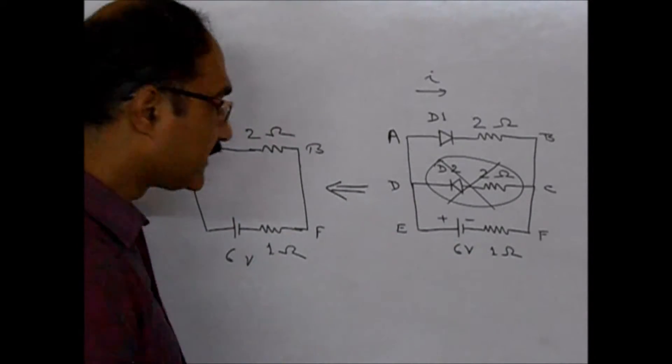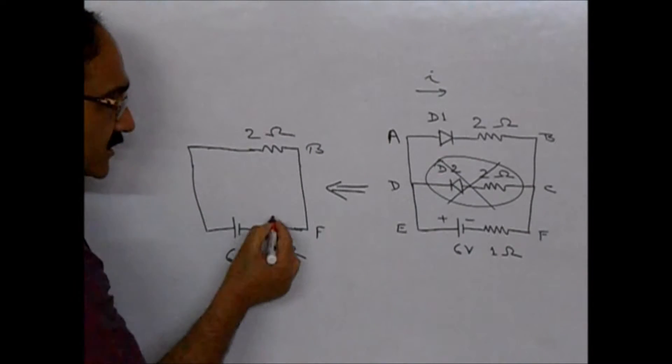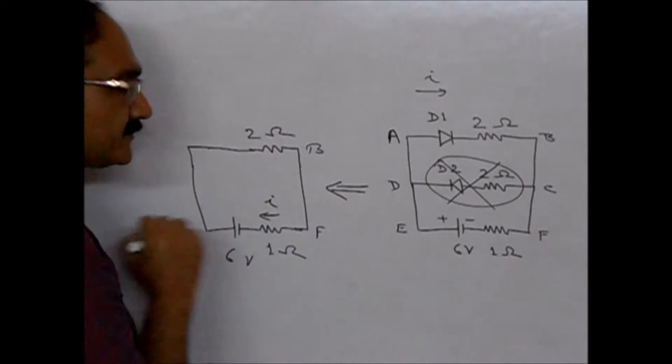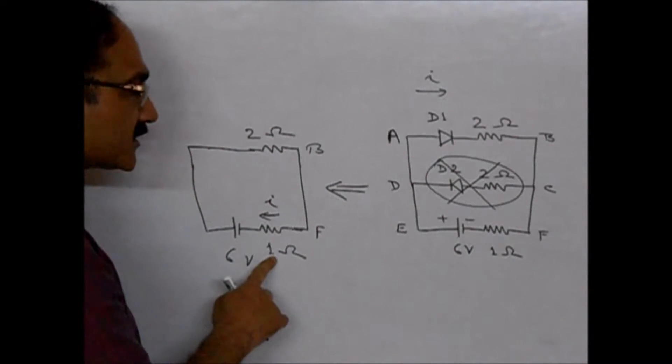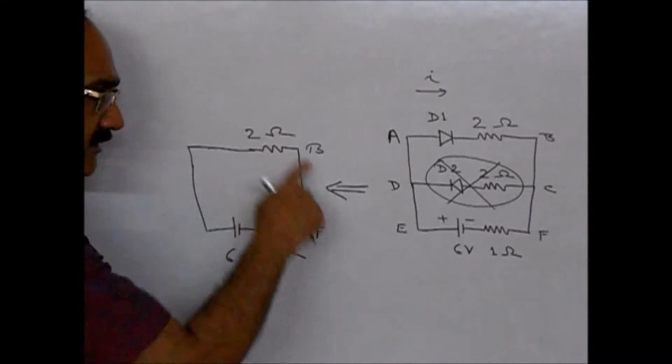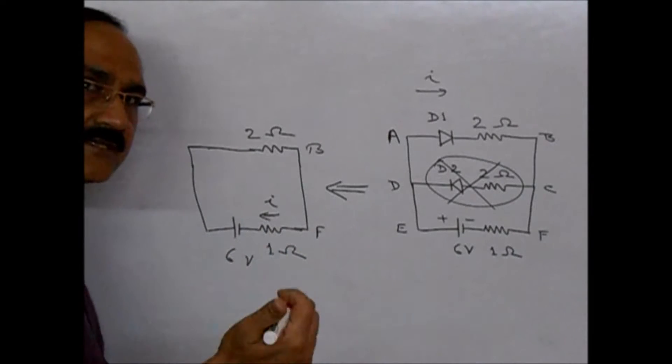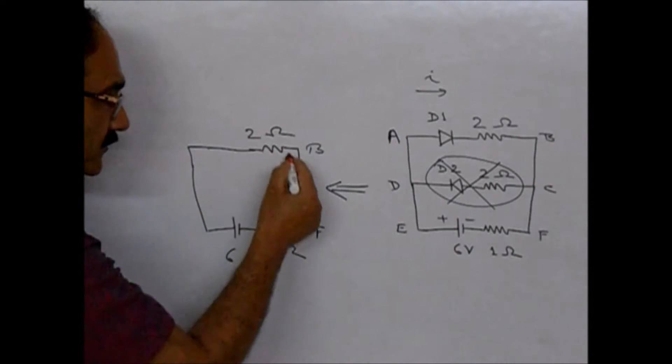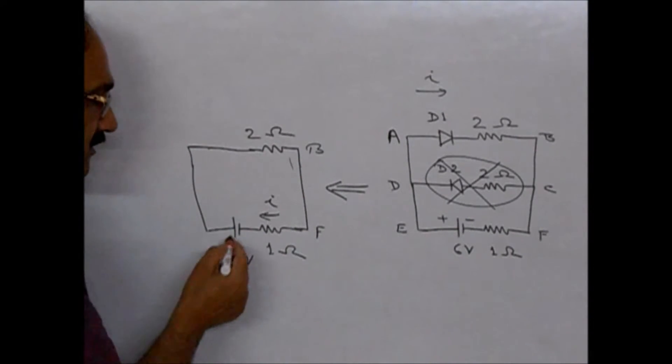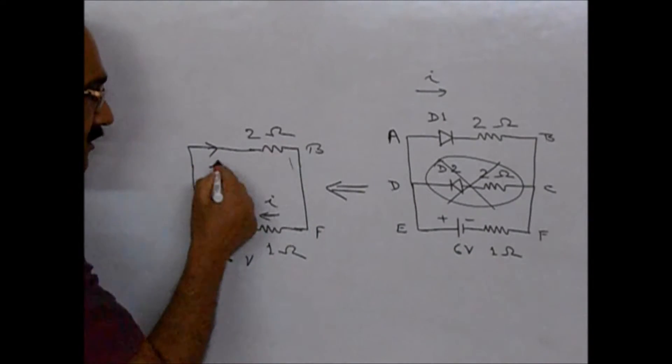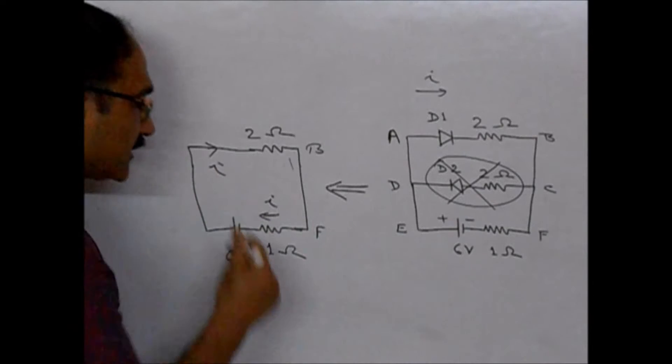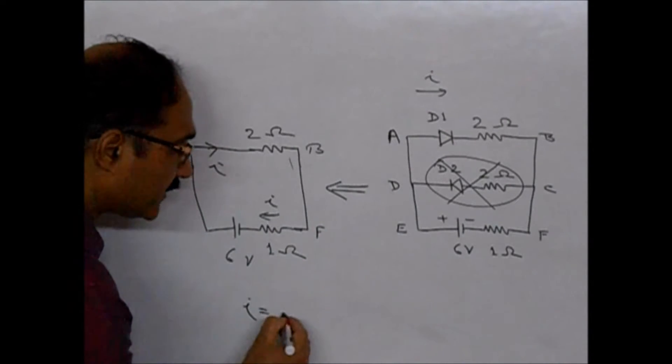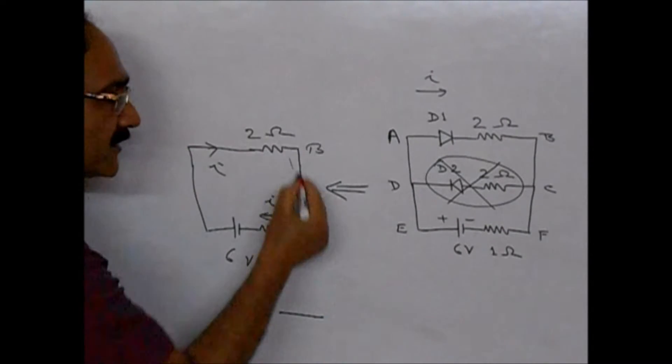Now we have to find out the current through this resistance 1-ohm. We have to find out the current through this 1-ohm resistance. Now if you look at this circuit, it is very easy to see that this 2-ohm and 1-ohm are in series because the same current flows through both the resistors.